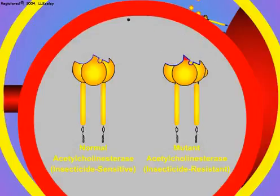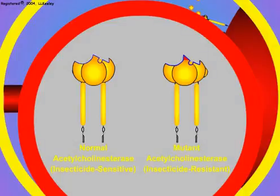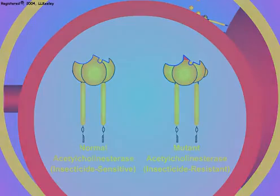Therefore, the resistant insects survive exposure to insecticides that target this enzyme. Let us now see how this mutation leads to the formation of an insecticide-resistant pest population.